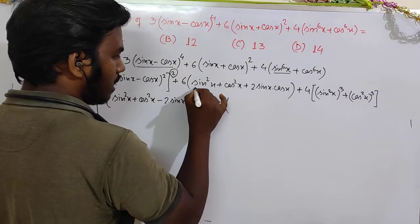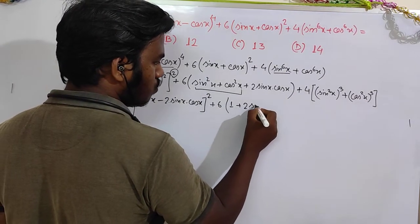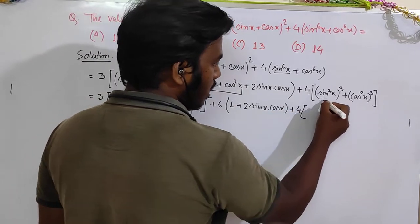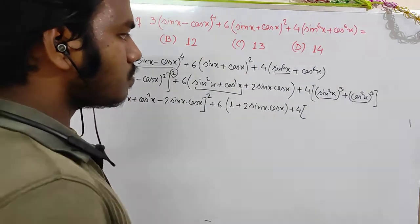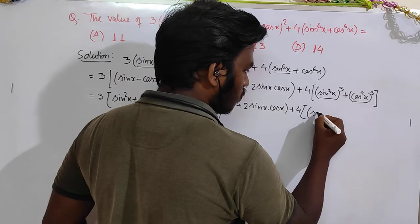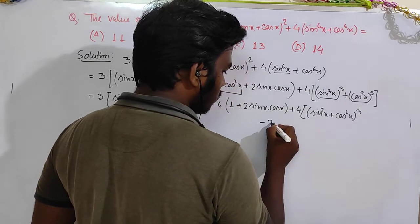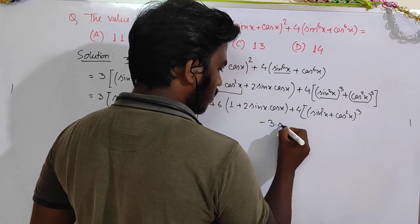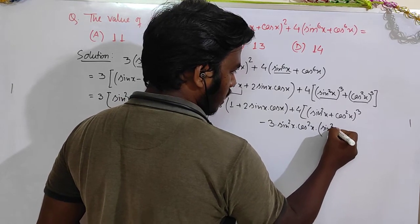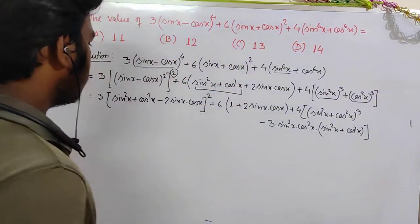That means we have: plus 6 into sin squared x plus cos squared x, which is 1, plus 2 sin x cos x. Plus 4 into a cubed plus b cubed, which is a plus b minus 3ab into a plus b.